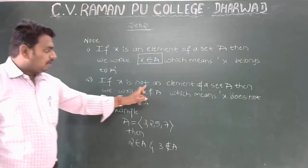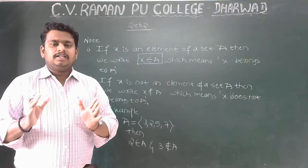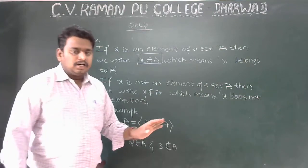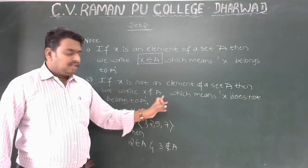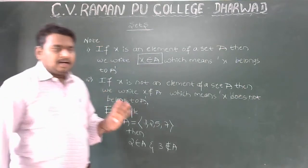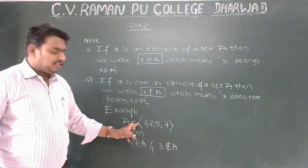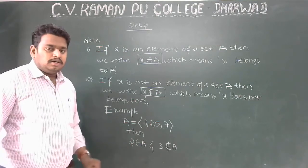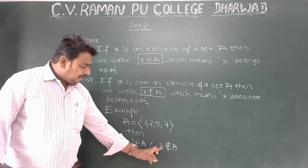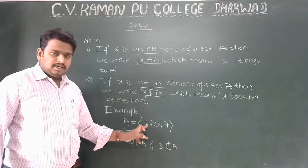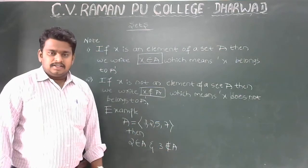If x is not an element of set A, then we write x ∉ A, which means 'x does not belong to A'. For example, with set A = {1, 2, 5, 7}: 2 belongs to A, so 2 ∈ A. But 3 is not in set A, so 3 ∉ A.